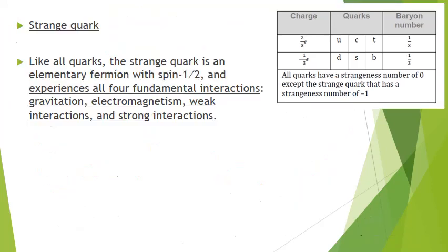The strange quark is a little bit different because it interacts with all four fundamental forces: gravitation, electromagnetism, weak, and strong. All quarks have a strange number of zero, but the strange quark has a strange number of negative one — it's the only one like that.